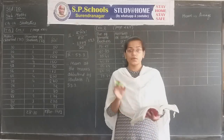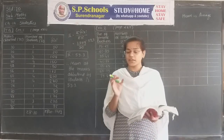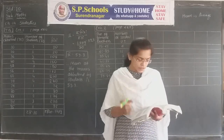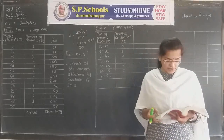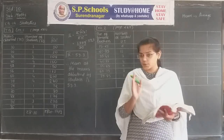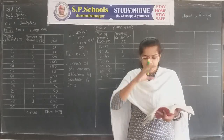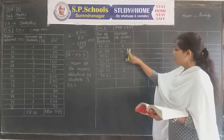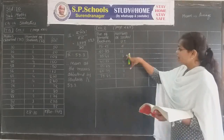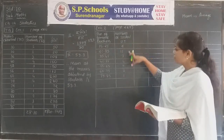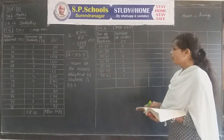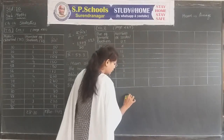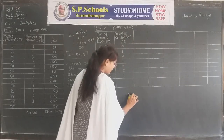We need to find the mean using all three methods. The value of mean will be equal in each and every method. The data gives percentage of female teachers and number of states/union territories. The horizontal table is given; I draw here a vertical table with columns: percentage of female teachers and number of states/union territories. First we use the direct method.